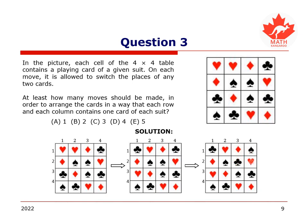The resulting square table contains exactly one card of each suit in each row and each column. Hence, the solution is B, at least two moves.